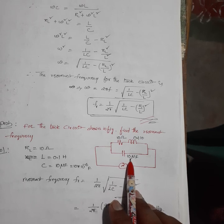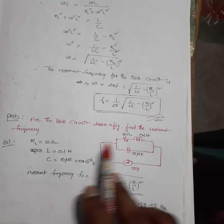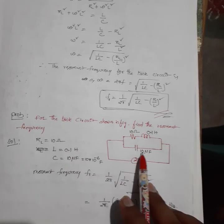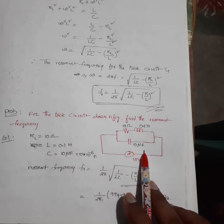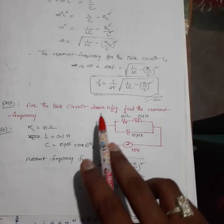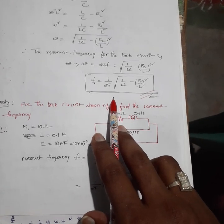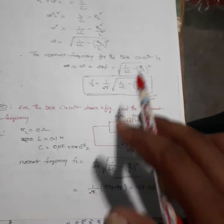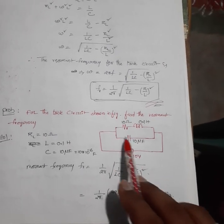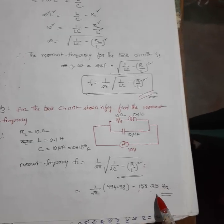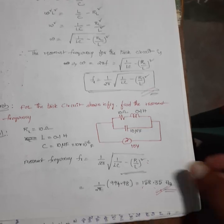Since it is a respective inductive element, I am writing R_L equals 10 ohms, L equals 0.1 Henry, and C equals 10 microfarads. The resonant frequency of the tank circuit is F₀ = 1 / (2π √(1/LC − (R/L)²)). Substituting the above three values into this formula gives the solution — this is a simple problem on the tank circuit.